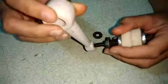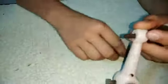Now fit this inside the bracket. Again place the washer and now tighten this nut.